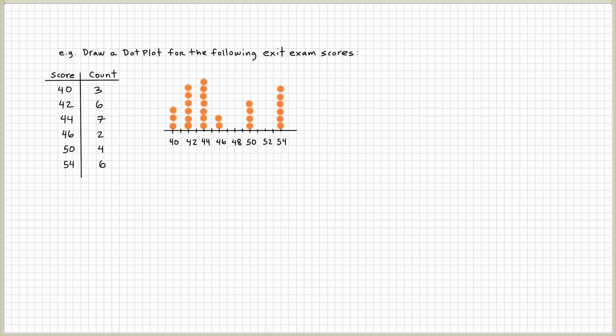So again, if we just look at the dot plot, we can ask ourselves, which is the top three highest values? 42, 44, and 54, which is the most exit exam score? By glancing at this, probably 44.